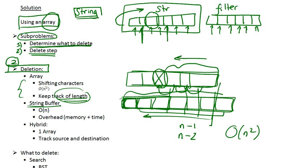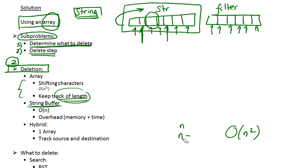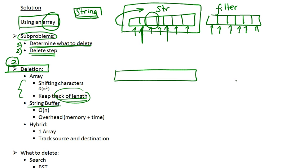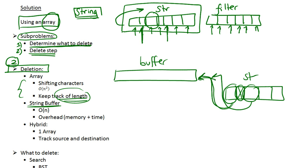A more efficient approach would be to use a string buffer. A string buffer would hold the characters that are not to be deleted. Suppose this was our array string and we were examining every single character. If we determine that a character must not be deleted, we simply append it to that string buffer — we allocate new space and append it. If a character needs to be deleted, we skip it and move on. At the end you will have all the characters not to be deleted in that buffer, and you can convert it to a string as your output.